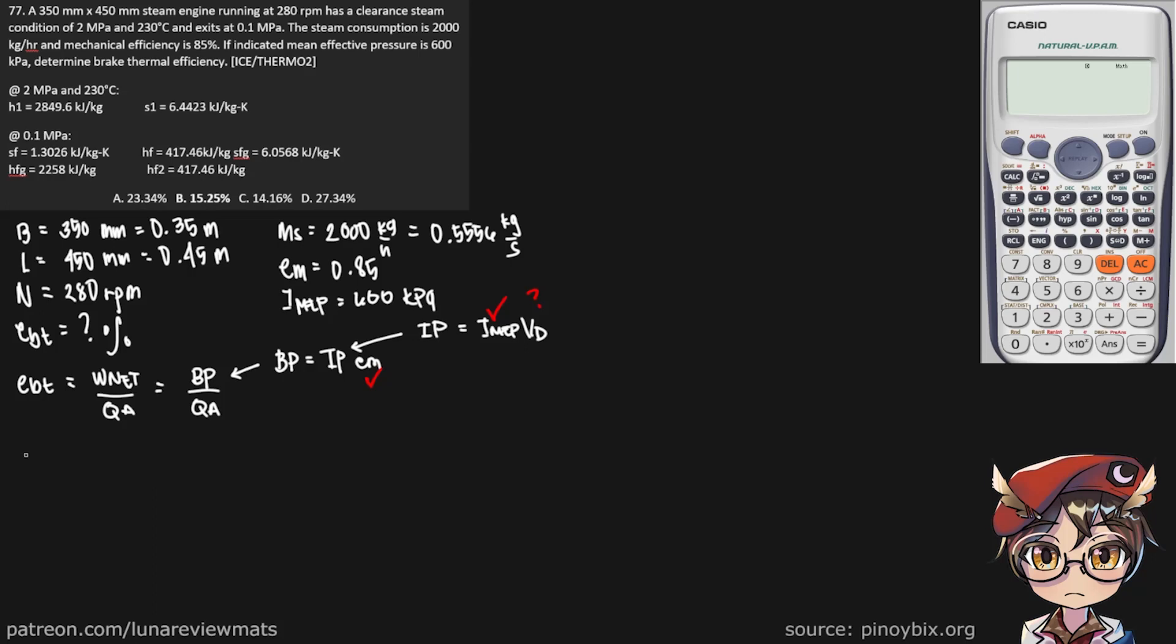The formula for the volume displacement is π over 4, bore raised to 2, multiplied by the stroke, multiplied by our RPM over 60, and finally multiplied by our piston stroke. And since this is a steam engine, it has two piston strokes, so n is equal to 2.